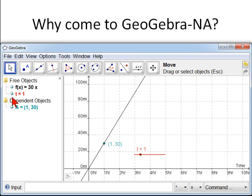So, here we have the function, f of x equals 30x, 30 miles an hour times x. And first thing you might notice is in GeoGebra, we can label the axes. So here's time, and it says hours. And here's miles.